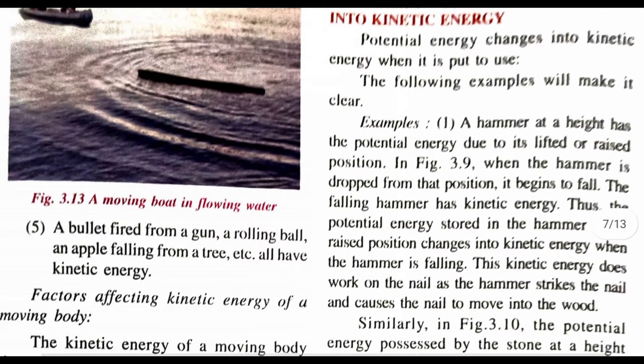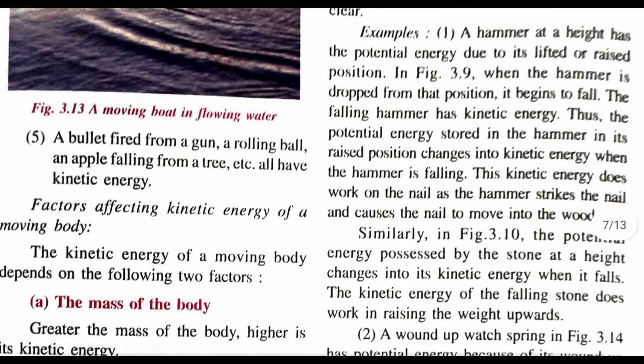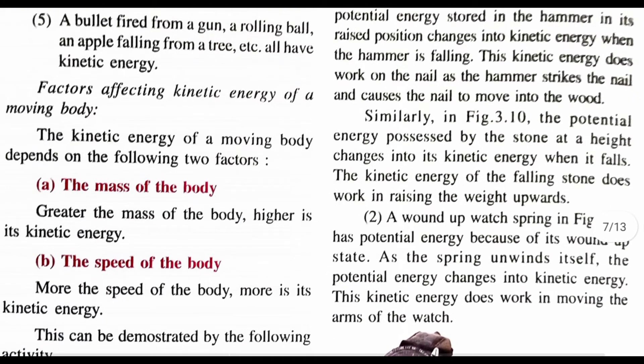A bullet fired from a gun, a rolling ball, and an apple falling from a tree all have kinetic energy. The bullet moves, the ball rolls, and the apple falls down from the tree — all because of kinetic energy.